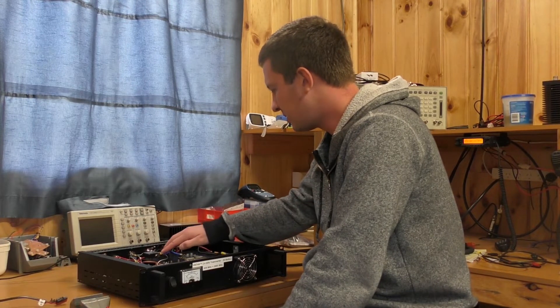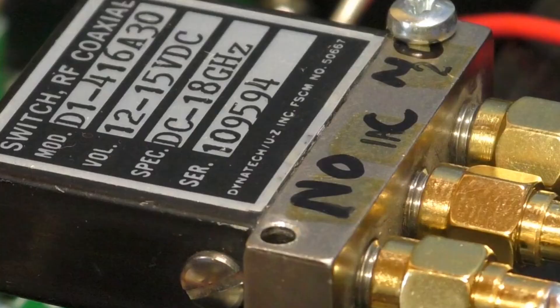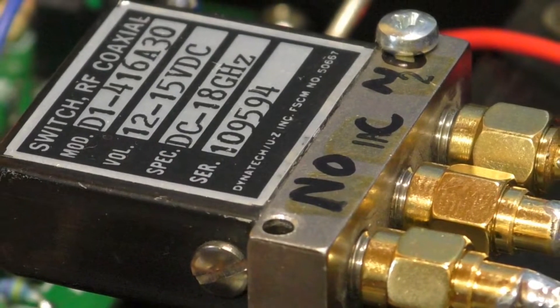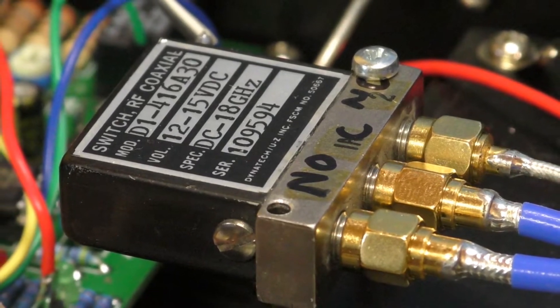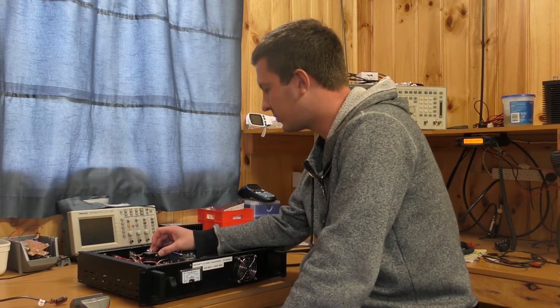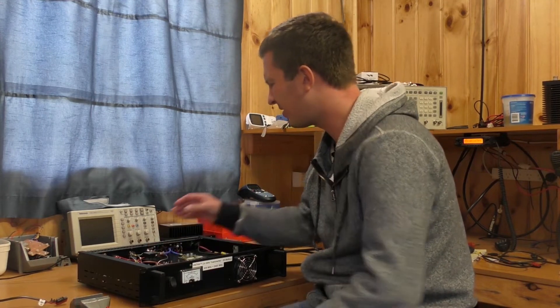Out of the PA goes into a 12 volt coaxial relay, again another eBay special. These things are really good - good thing about them is they're 12 volts, they're not 24 volt relays. These things will switch DC to 18 gigs at quite a high power, I think it was something like a hundred watts or something at 2.4 gigs.